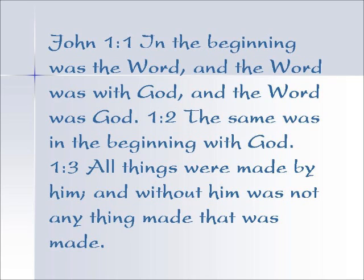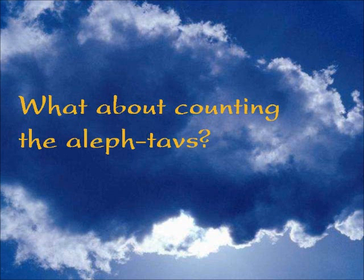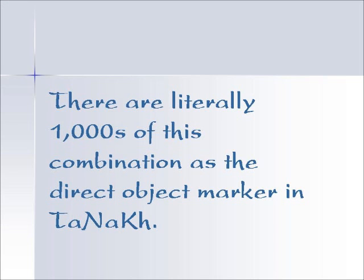It's possible that there is a pointing of the Aleph Tav to Yeshua, and we want to investigate that today. Is it possible to actually count all the Aleph Tavs in Tanakh? It appears in several different formats: standing by itself, hyphenated to another word, with a Vav, or attached to a personal pronoun. There are literally thousands of Aleph Tavs as the direct object marker in Tanakh — over 3,000 in the first five books of Moses alone. This is a pretty large task.